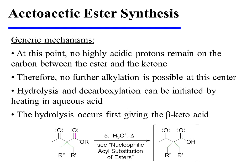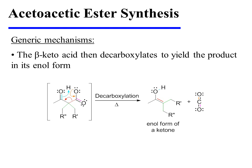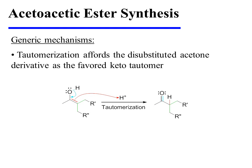Hydrolysis and decarboxylation can be initiated by heating with aqueous acid. The hydrolysis occurs first, giving the beta-keto acid. This beta-keto acid then decarboxylates to yield the product as its enol tautomer. Finally, spontaneous tautomerization affords the disubstituted acetone derivative as the favored keto tautomer.